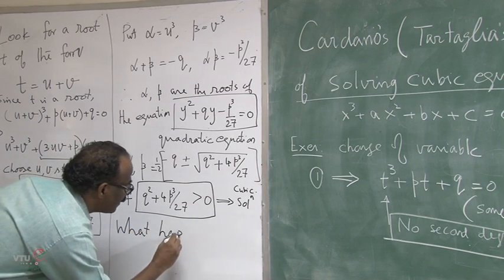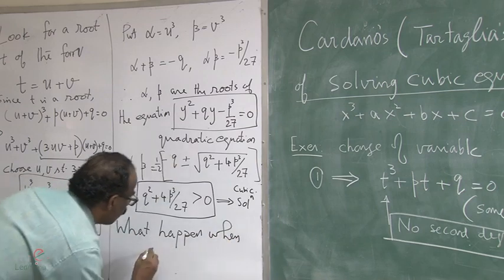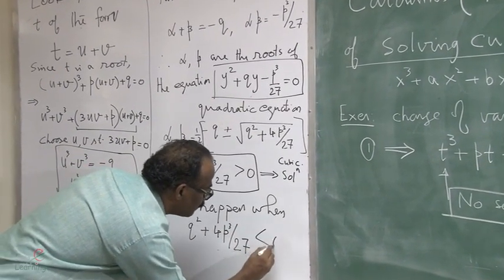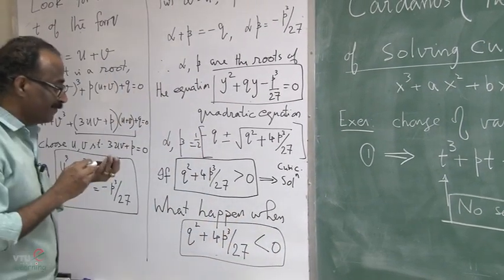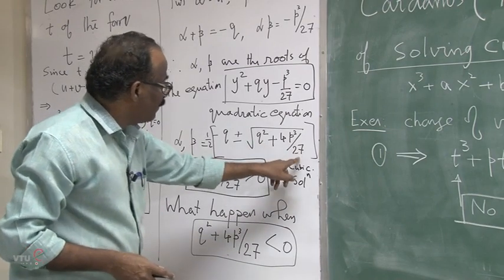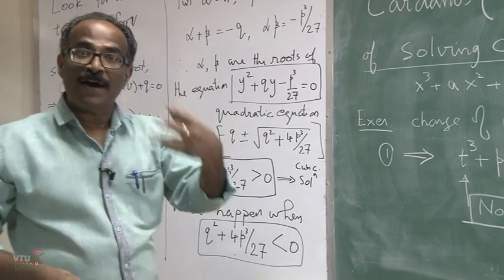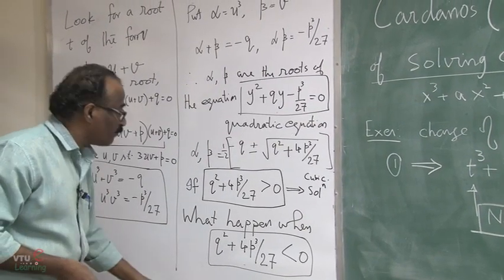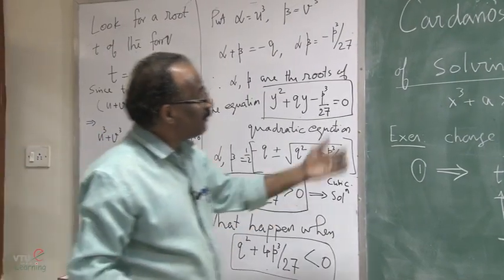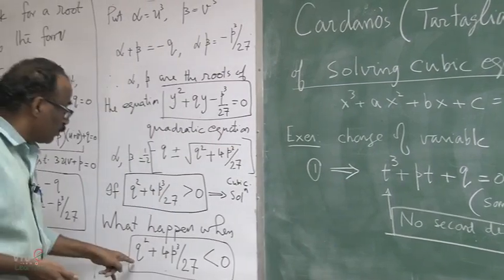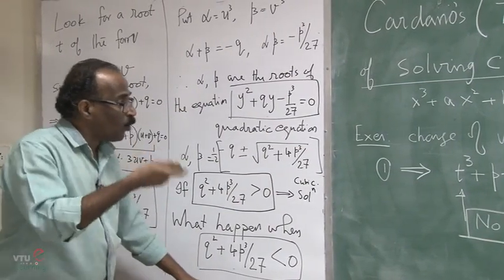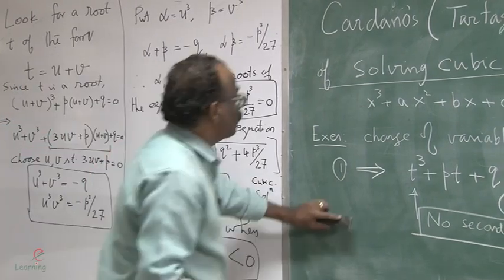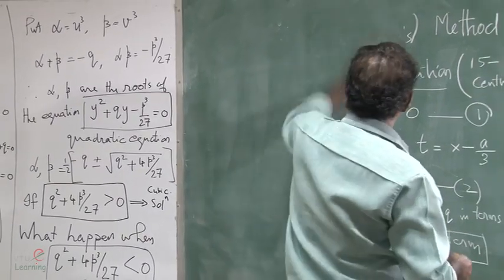The problem comes when q squared plus 4p cubed over 27 is negative. Then that expression under the square root is negative and we have the problem of finding the square root of a negative number. This is one important occasion where you want to solve a precise problem and the square root of a negative number naturally occurs.